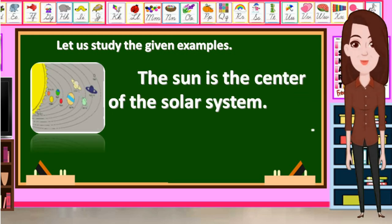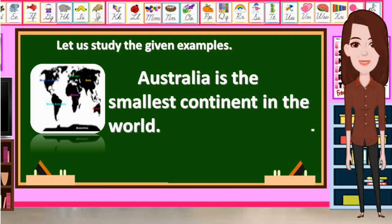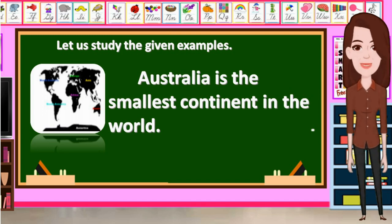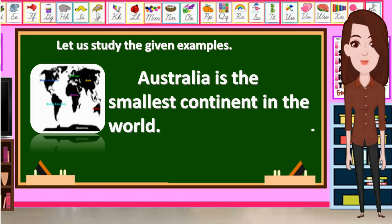Another example: The sun is the center of the solar system. It is a fact — we can prove it through scientific data and other references. Another example: Australia is the smallest continent in the world. By using a World Atlas or other references, we can verify that Australia is the smallest continent in the world.